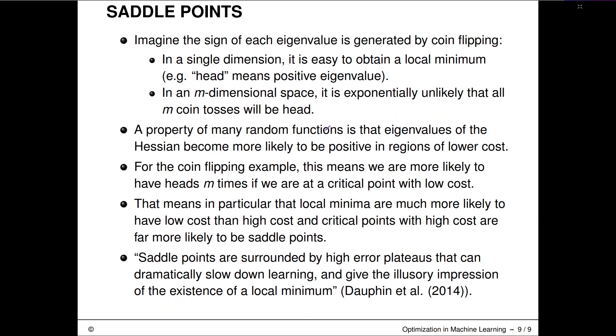Imagine you would create Hessian matrices by coin flipping. For every eigenvalue, for every dimension of the inputs, for every one of these M dimensions, you're going to flip a coin. Heads might mean positive eigenvalue, tails might mean negative eigenvalue.